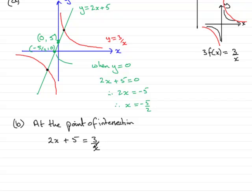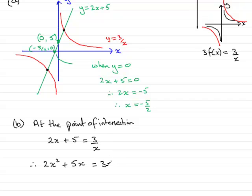We have a fractional equation, so always get rid of the fraction — multiply both sides by x. This gives 2x squared, plus 5x on the left, and the x's cancel on the right leaving just 3. We now have a quadratic equation, so rearrange to equal zero: 2x squared plus 5x minus 3 equals 0.